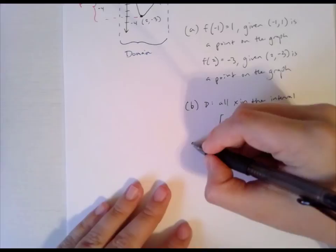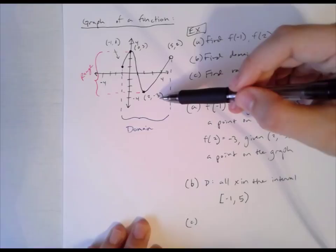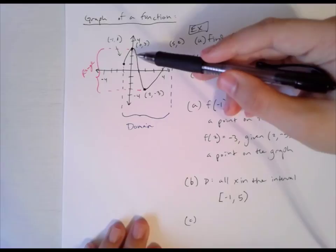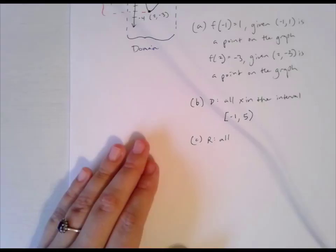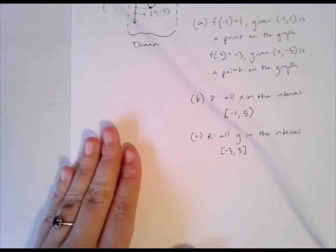For our range, we find it by going from the bottom to the top of the graph. The bottom is at Y = -3, and we go up to the point (0, 3). We have closed circles on both ends, so the range is all Y in the interval [-3, 3]. That's a quick review of domain and range.